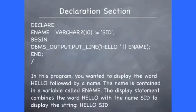In this example, a declaration section has been created. The word declare starts the declaration section. In this program, a variable called ename is declared, which can hold a variable-length character data type of value. A value is being assigned to the variable during its declaration — the value is the name Sid. In the body of the program, a display statement displays the word hello, followed by the value contained in the variable ename, to display the words 'hello Sid' on the screen.